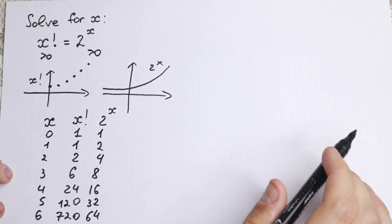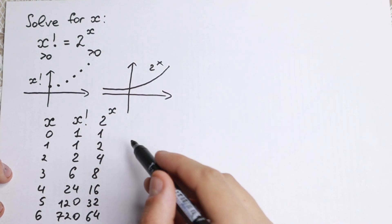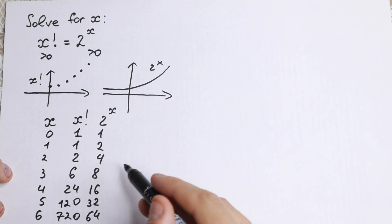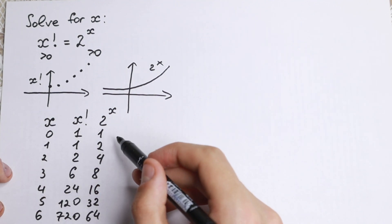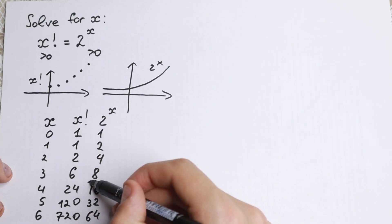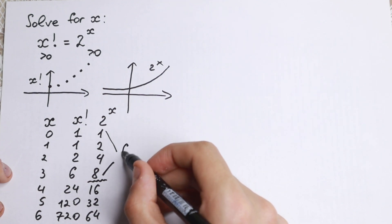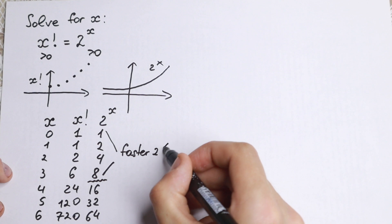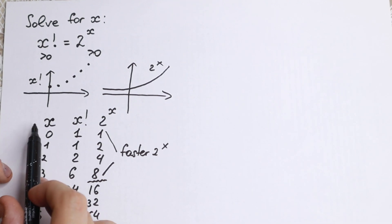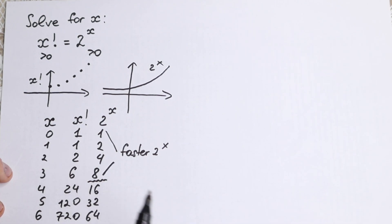So as you can see, we can compare how much faster each function grows. Between 0 and 3, the function 2 to the x grows much faster than x factorial: we get 1 vs 1, 2 vs 2, 4 vs 6 — 2 to the x is ahead. But after x equals 3, the factorial function grows faster.